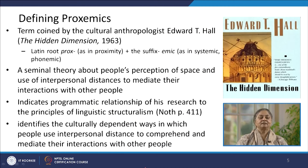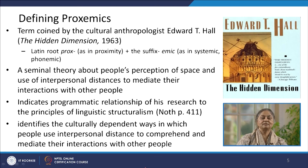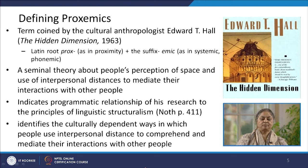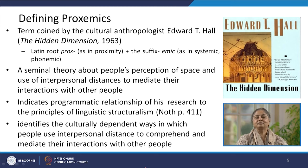The term proxemics was coined by cultural anthropologist Edward T. Hall. He used this word in his 1963 publication, The Hidden Dimension — a dimension never specifically talked about by anybody. He put across his seminal theory about our perception of space and use of interpersonal distances to mediate interactions with other people. He also indicated a pragmatic relationship of his research to the principles of linguistic structuralism and identified culturally dependent ways in which people use interpersonal distances to comprehend and mediate their associations with others.